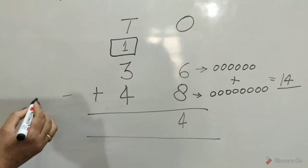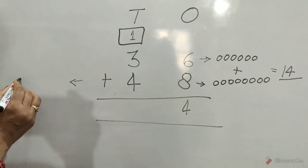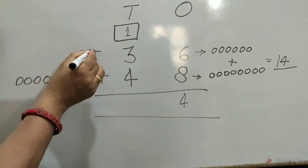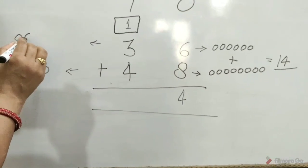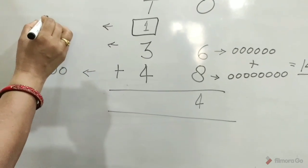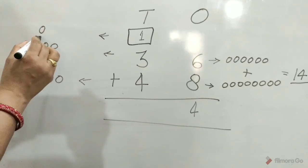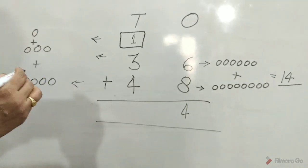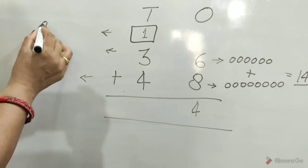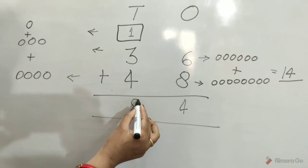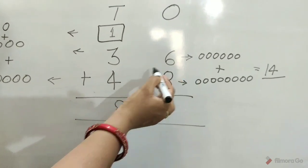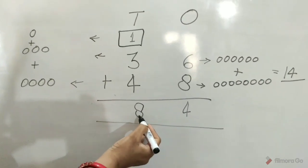Again, we can draw 4 circles in front of 4 tens: 1, 2, 3, 4. And 3 circles in front of 3 tens: 1, 2, 3. Count all together: 1, 2, 3, 4, 5, 6, 7, 8. The total number of circles are 8. So we write here 8 tens. 36 plus 48 is equal to 84. Answer.